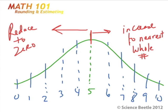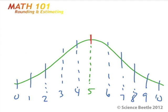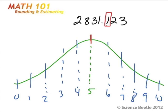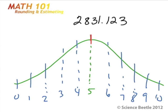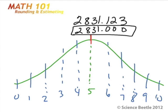Let's do an example. Recall from the previous lesson, we had the number 2831.123. Whenever you're estimating, the number that you're really looking at is going to be the number immediately to the right of the decimal. So the number we're looking at is 1. Where does it fall on the line? It falls less than 5, so I have to reduce this to 0. Everything to the right of this number also becomes 0. The resulting estimation is 2831.